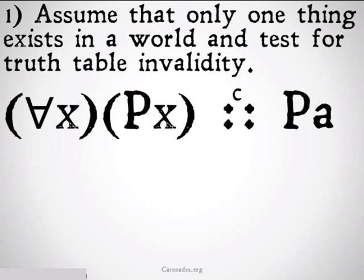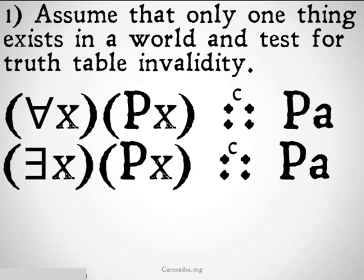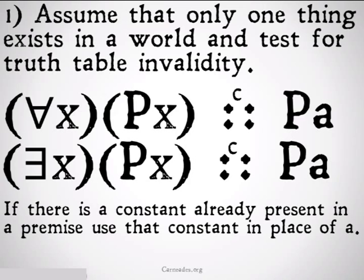To assume that only one thing exists, we take our universal statement 'for all x, x is P' and say it's equivalent to 'a is P', since a is the only thing that exists in this world. Similarly, 'there exists an x such that x is P' just means 'a is P', because there's only one thing in the world. It's important to note that if there's already a constant present in a premise, that constant should be used in place of A. If there's more than one constant, skip to the second step, because there's already more than one thing in the universe.